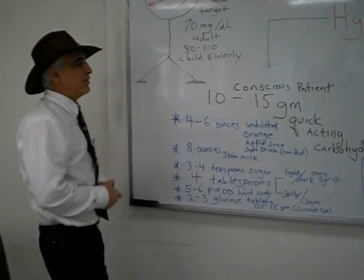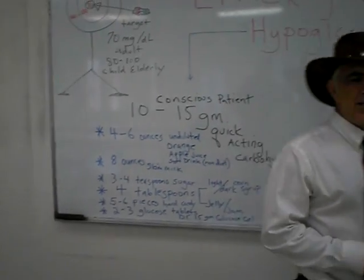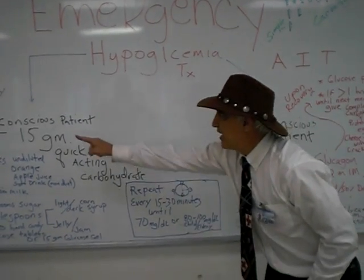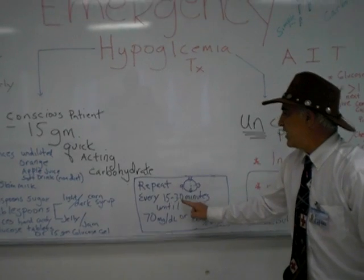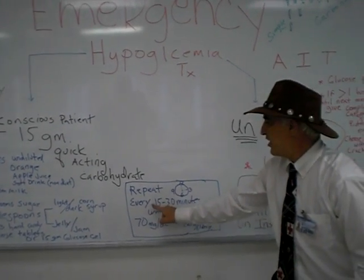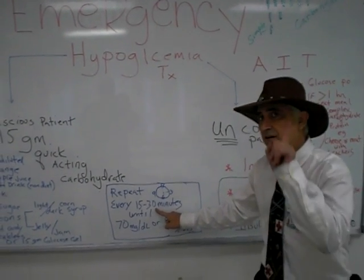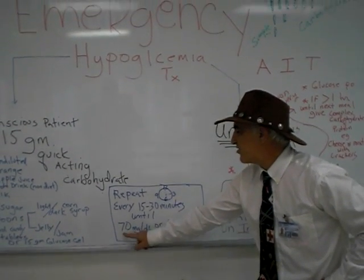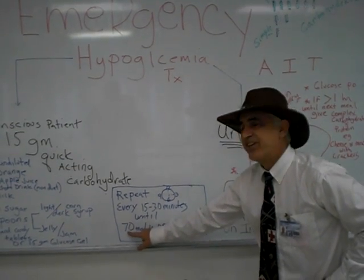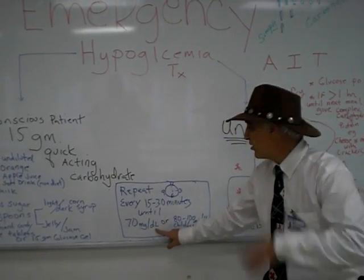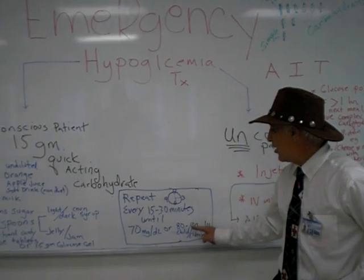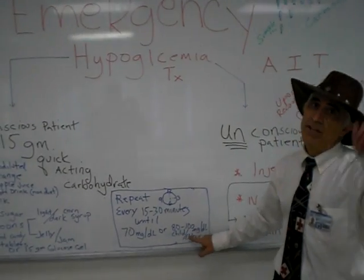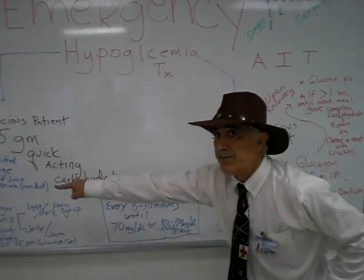We may have to repeat the 10 to 15 grams every 15 to 30 minutes until we reach our goal. The target blood sugar for the adult is 70 milligrams per deciliter, and for the child or elderly it is 80 to 100 milligrams per deciliter. We may have to repeat dosing multiple times.